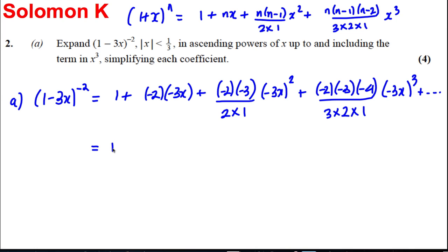Now it's time for tidying that up. That's 1 + 6x. This here would be -2 × -3/(2×1) and all of that multiplied by 9x², so it would be 27. So it would be plus 27x². And this one here would be... When we type that all in our calculator, we're going to get ourselves plus 108x³ plus dot dot dot. And we've simplified each coefficient. So (1 - 3x)^(-2) is as follows, and that's true for the modulus of x less than or equal to a third.